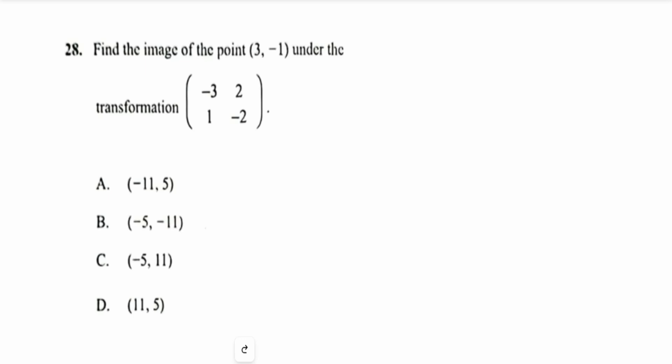We start by saying that the image of any arbitrary point with coordinates (x, y) under any arbitrary 2 by 2 matrix with entries a, b, c, and d, the image is obtained by multiplying the matrix by the point (x, y) in column form, which will give us ax + by as the x coordinate of the image and cx + dy as the y coordinate of the image.